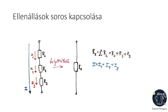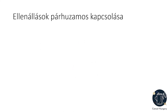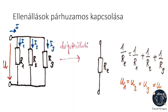Soros esetben minden ellenálláson ugyanaz az ágáram folyik keresztül, viszont az ellenállásokra rendre U1, U2 és U3 feszültség esik. Az ellenállásokat párhuzamosan is kapcsolhatjuk. Három darab párhuzamosan kapcsolt R1, R2 és R3 ellenállás helyettesíthető egy darab eredő ellenállással. Ekkor az eredő ellenállás reciproka az ellenállások reciprokának az összege. Minél több ellenállást kötünk párhuzamosan, az eredő ellenállás értéke annál jobban csökken. Párhuzamos esetben a csomópontokban az áram megoszlik, és minden ellenálláson azonos feszültség esik.